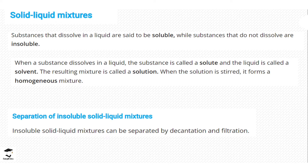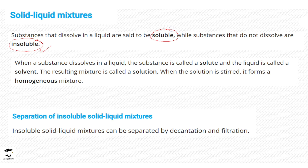We will start by defining a few terms. Substances that dissolve in a liquid are referred to as soluble, while substances that do not dissolve are called insoluble. For example, if you put sand in water it is not going to dissolve, so we call it insoluble. If you put sugar in tea and stir the solution, the sugar is going to dissolve in the tea, and we refer to sugar as soluble.